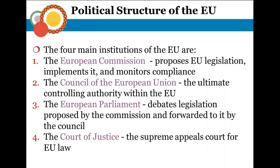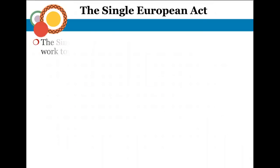The EU has four main political institutions: a European Commission, which proposes and implements legislation and monitors compliance; a Council of the European Union, which is the controlling authority; a European Parliament, which debates and forwards legislation — similar to a Congress; and a Court of Justice, which functions like a Supreme Court handling EU law.